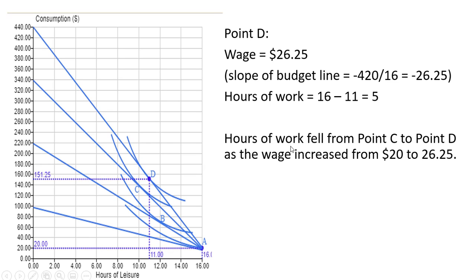So, in fact, hours of work fell from point C to point D. Going from point C to point D, the person chooses more leisure. So as the wage increased from $20 to $26.25, the person actually took more leisure. This person's labor supply curve then begins to bend backwards.